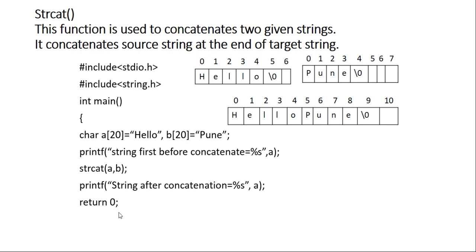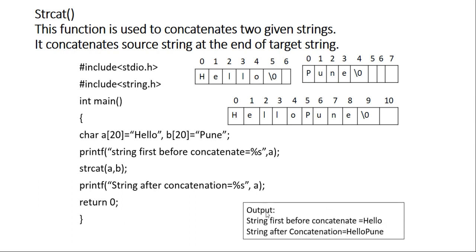Because, as you use int here, you need to write return 0. And, end of your main function. You will get the result as string first before concatenation is hello. And, string after concatenation is hello coding.